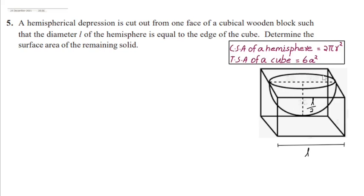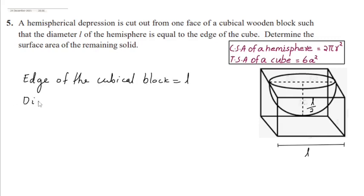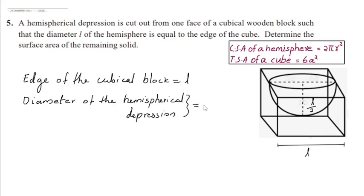A hemispherical depression is cut out from the top face of this cubical wooden block. The edge of the cubical block is L, which is equal to the diameter of this hemispherical depression. So, the radius of the hemispherical depression is L by 2.